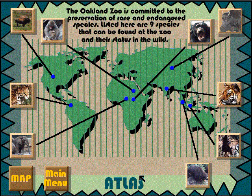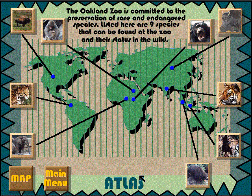The Oakland Zoo is broken into three main parts: the Atlas, the Zoo Map, and the Virtual Zoo Walk. Let us start by explaining how the Atlas works.